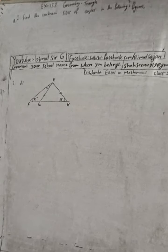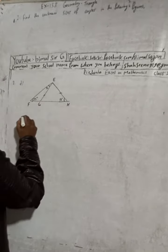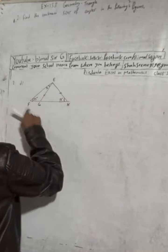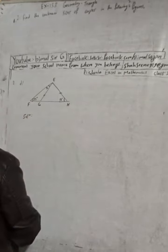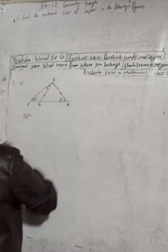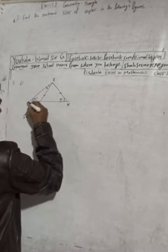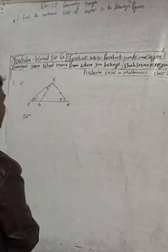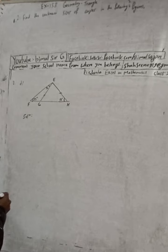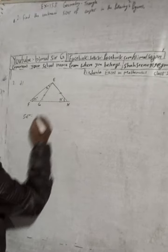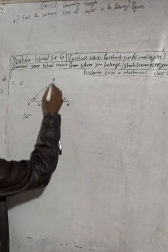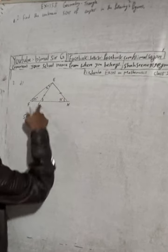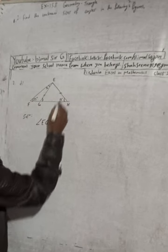Question number 2d solution: in this triangle we can see vertices EFGH. This angle is 35 degrees and this angle is 25 degrees, and these two sides are equal. That means we can write this angle is also equal to 35 degrees. So angle EGH is equal to 55 degrees.